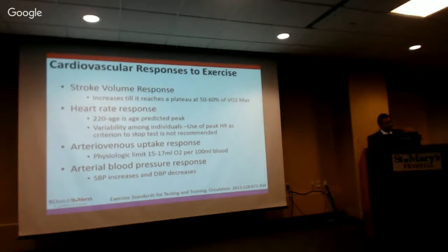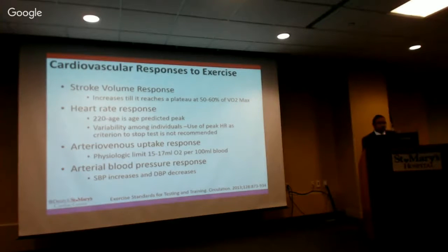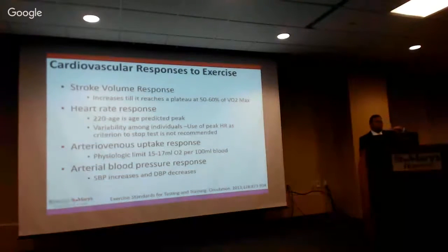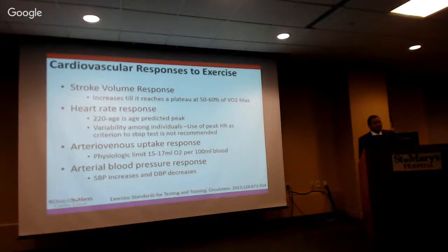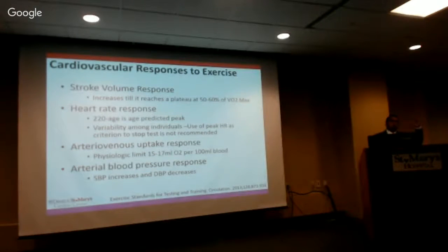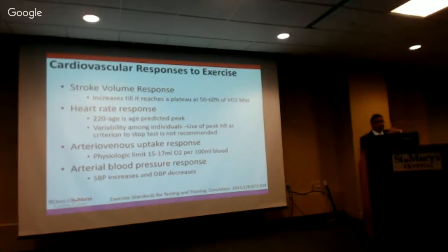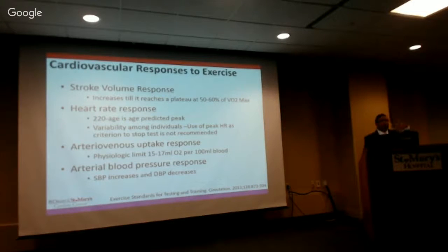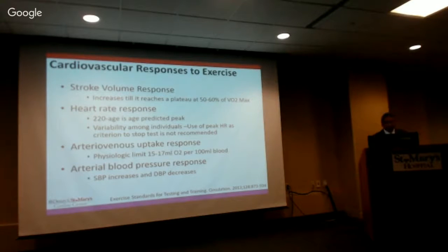Regarding arterial-venous oxygen uptake, we extract more oxygen from our blood as demands increase, and there's a physiologic limit to this. Our blood pressure response to exercise is that systolic blood pressure normally goes up substantially — it can go up to 200 mmHg — and your diastolic generally tends to drop.